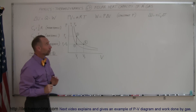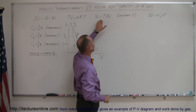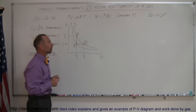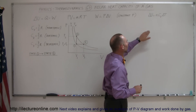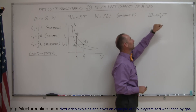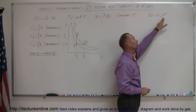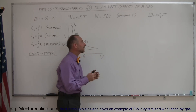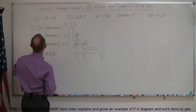We've also learned that in the simplistic case where the pressure is constant, the work is always equal to the pressure times the change in the volume of the gas. And finally, we've also learned that the change in the internal energy of a gas is equal to N C sub V delta T, where N is the number of moles, delta T is the change in temperature, and C sub V is the molar heat capacity of the gas.